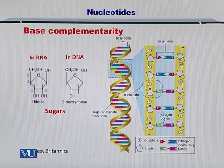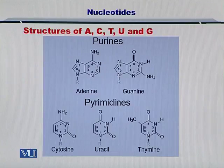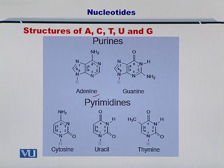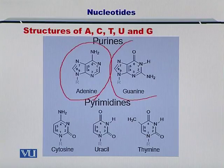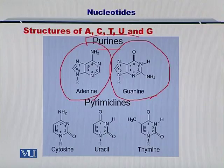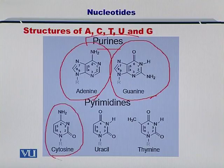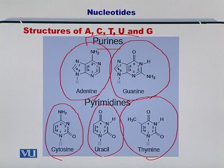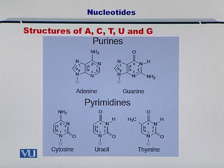The nucleotide bases are attached to the sugars. So, there are five different nucleotides if you look at the DNA and the RNA together. You have adenine and guanine drawn here — these are termed as the purines due to their structure. And then you have cytosine, uracil and thymine which are the pyrimidines. So, the difference here is in the structure.